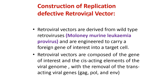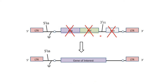For construction of a replication-defective retrovirus: retroviral vectors are derived from wild-type retroviruses and are engineered to carry a foreign gene of interest into the target cell. The retrovirus vector is composed of the gene of interest and cis-acting elements of the viral genome. With the removal of trans-acting viral genes like gag, pol, and env, we can construct the retroviral vector. As shown in the picture, the trans-acting viral genes are removed to add the gene of interest, creating the retroviral vector.